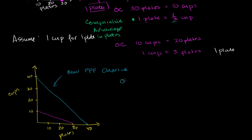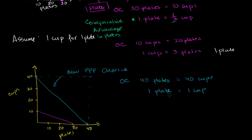What is Charlie's new opportunity cost? If he's producing 40 cups, to produce 40 plates instead he would have to give up those 40 cups. So his opportunity cost of 40 plates equals 40 cups. Dividing both sides by 40, his opportunity cost for one plate equals one cup. This makes the math easy: his opportunity cost for one cup equals one plate.